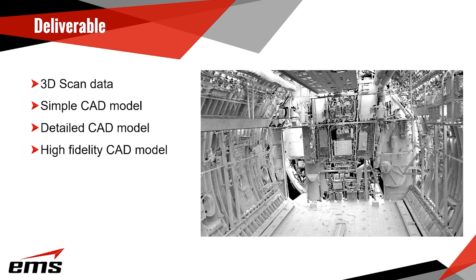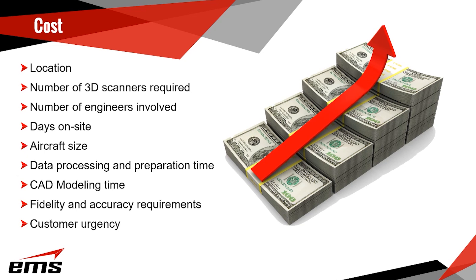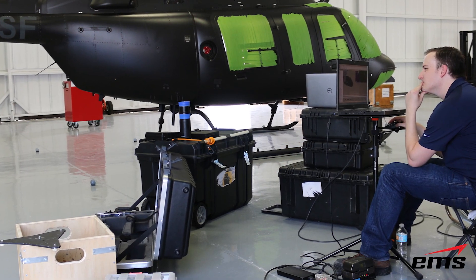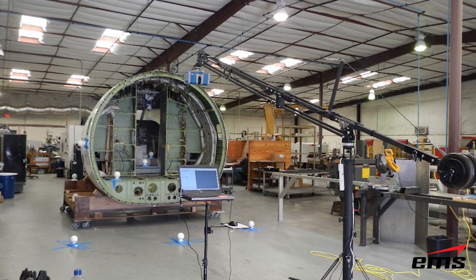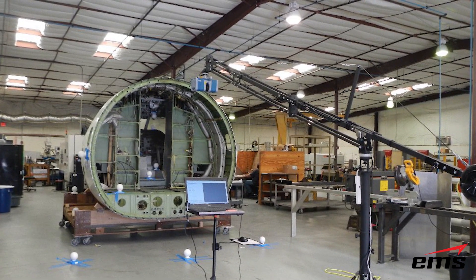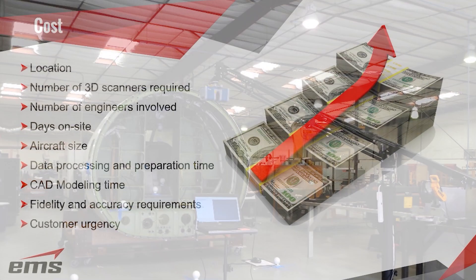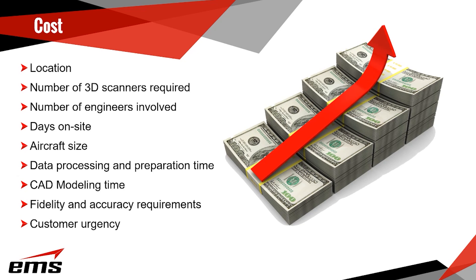Let's talk about cost and what drives it. Location matters — where is the aircraft? Is it in another country or a remote location? Typically we're sending one, two, three, or four engineers along with lots of equipment: cases, tripods, jib arms, computers, targets and artifacts. Depending on the project, we could be shipping eight, ten, twelve, or fifteen cases full of equipment, and all of that adds up.